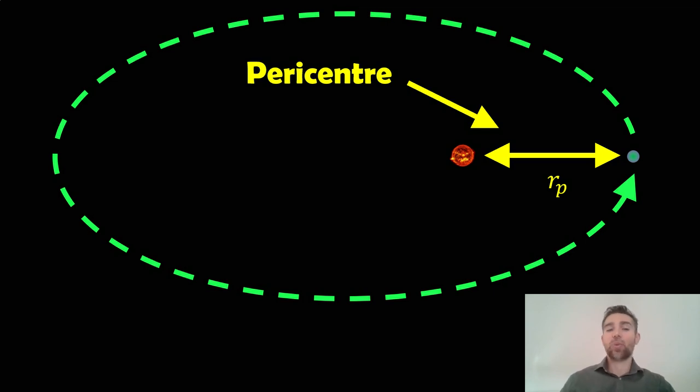And then the opposite one will be on the other side and that will be the apocentre. And that would be the furthest away that the two objects are. With an elliptical orbit, the distance between the two objects changes during its orbit. For a circular orbit, then actually that remains constant along with the orbital velocity.